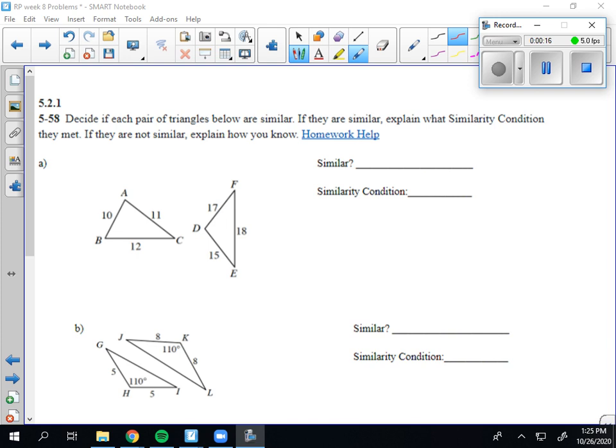So the first one, because they don't give me any angles, the only possible way they could be similar would be side, side, side. So I have to check and make sure that they have the same side length ratio, otherwise they're not going to be similar.